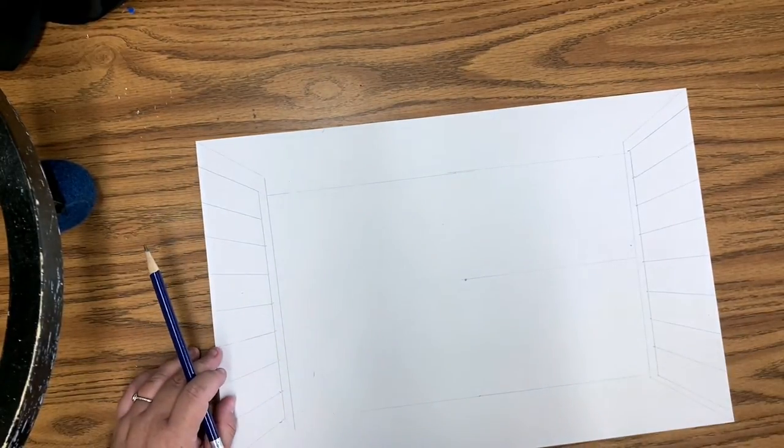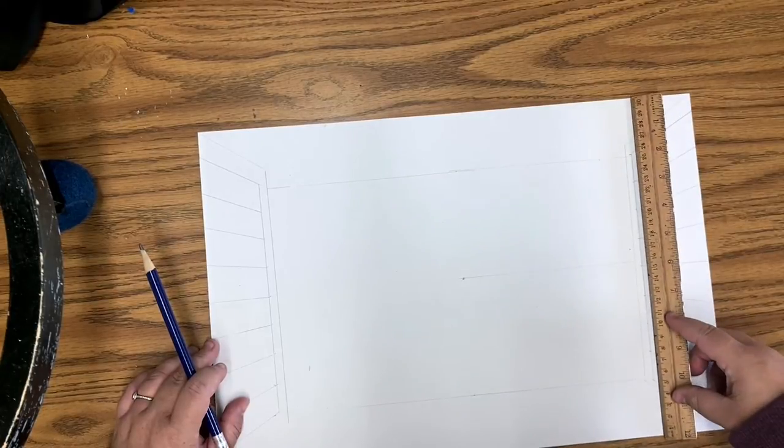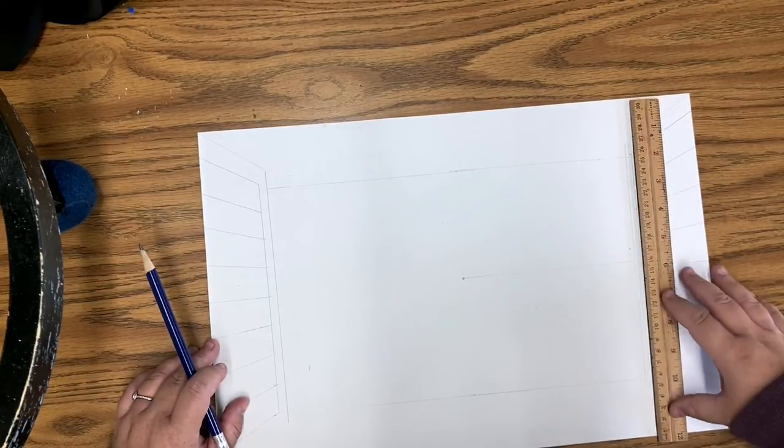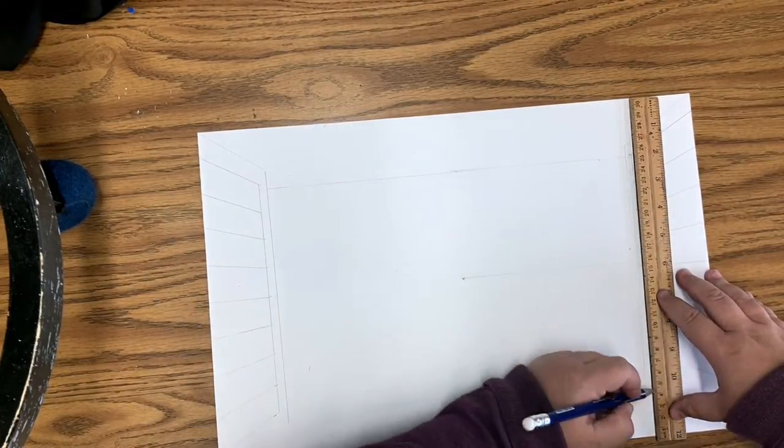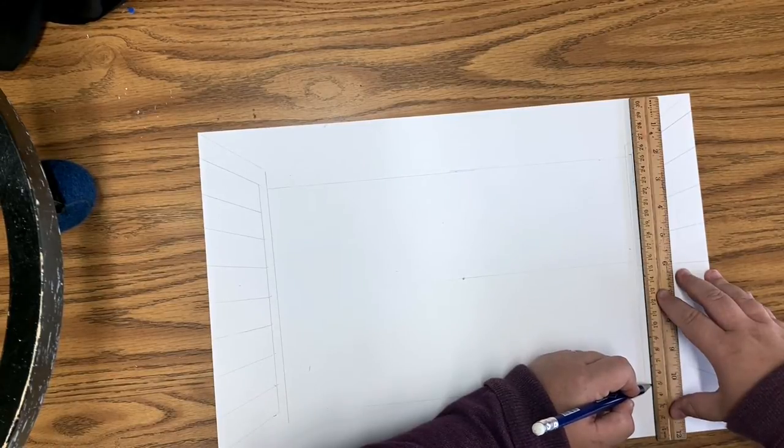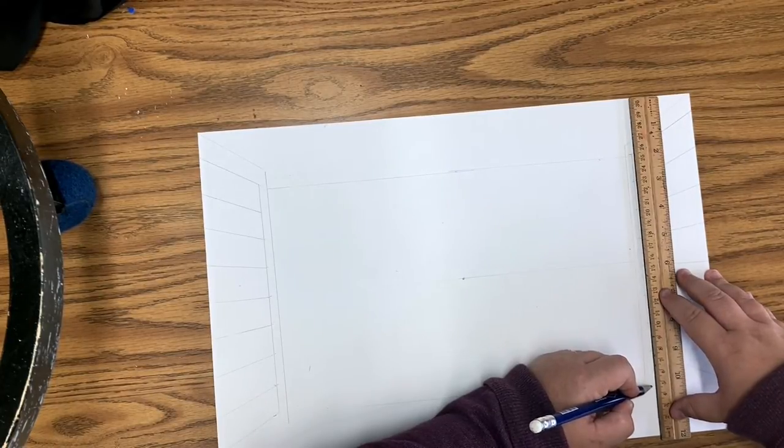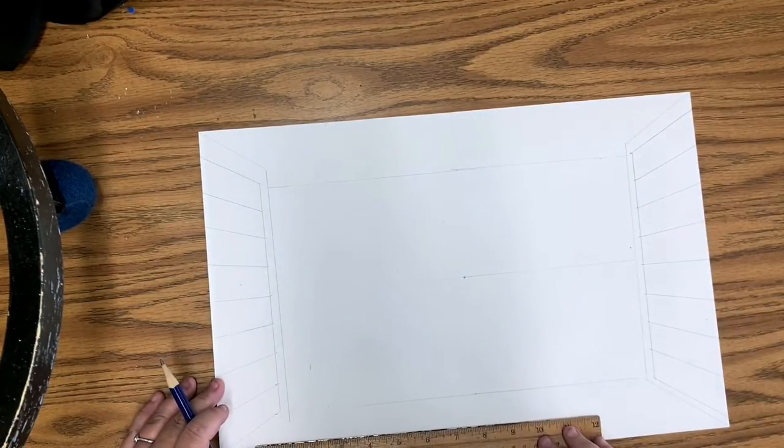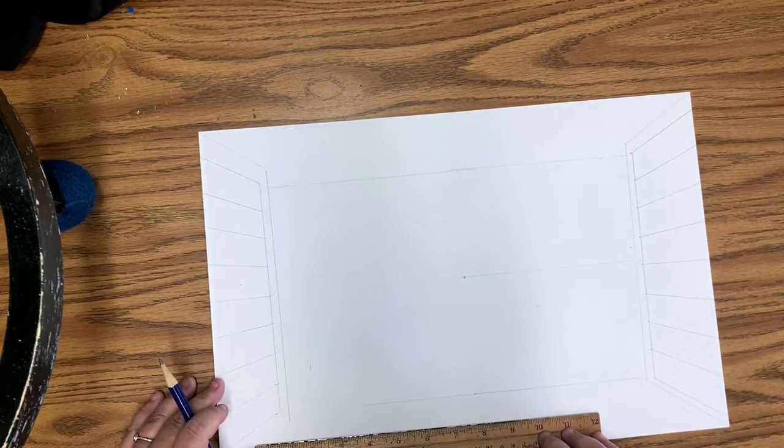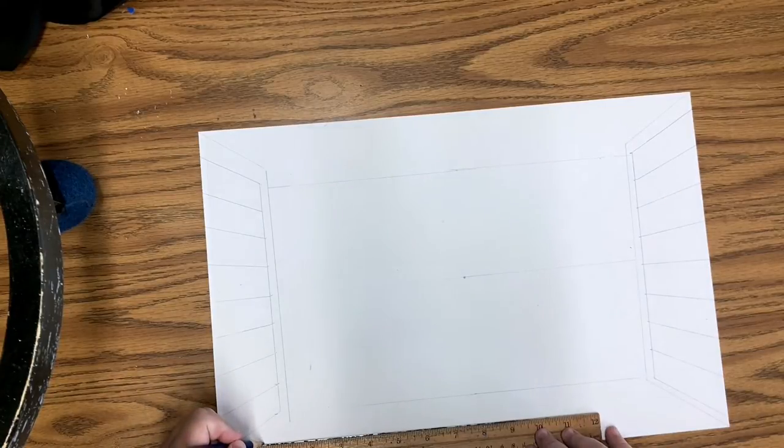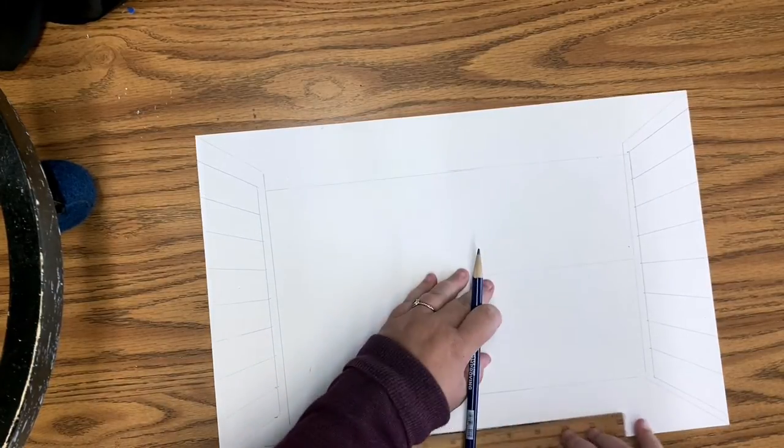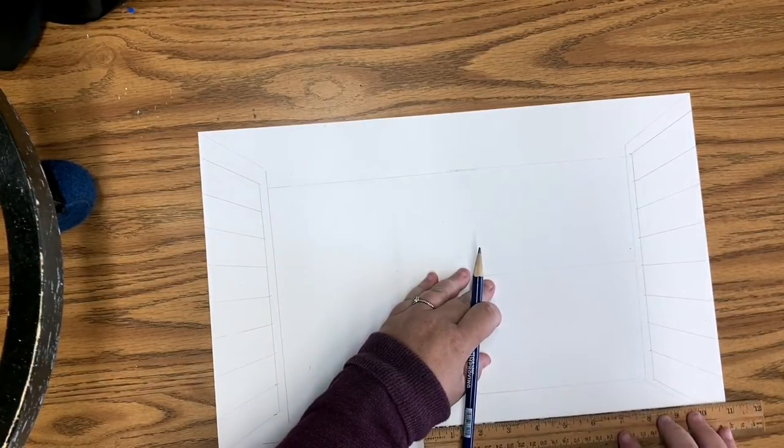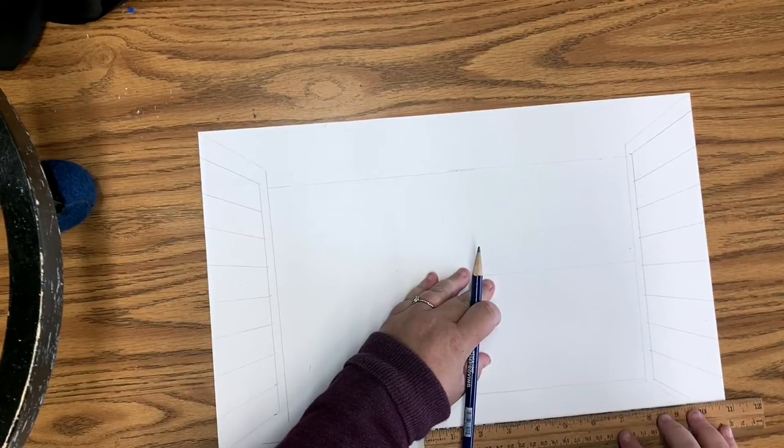So now that I have created both shutters, I am going to create a windowsill by drawing a line out from the shutter and then I am going to curve the line like a C to create a windowsill and draw a vertical line that goes across to create the windowsill.